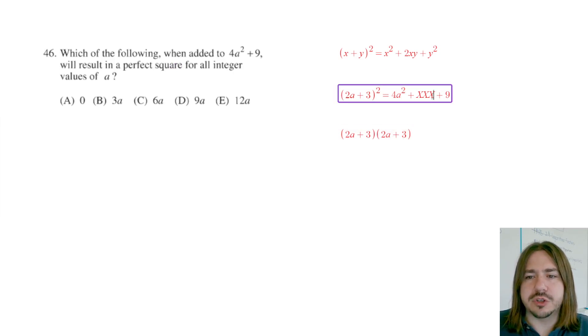So the question is what should go in the middle here? Well once we break this down we can just multiply this out. We already know that 2a times 2a is going to be the 4a squared, and we know 3 times 3 equals 9.